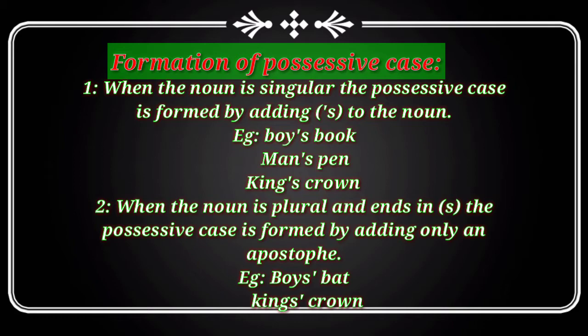It's not so difficult. When a noun is plural and already ends in S, and you need to show possession, you place the apostrophe after the existing S. You do not add another S.